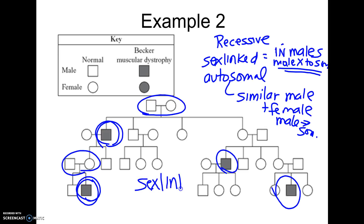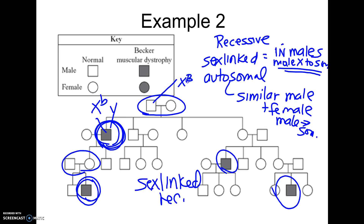This is a perfect picture of what you'd see for a sex-linked recessive pedigree. That means this guy would be X^b Y. Since he has it, where did he get it from? His dad doesn't have it, so he must have gotten it from his mom. She would have to be X^B X^b — she would have to be a carrier.